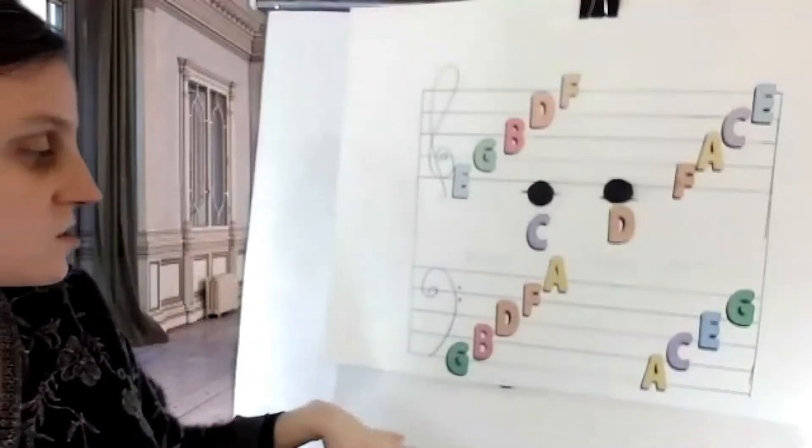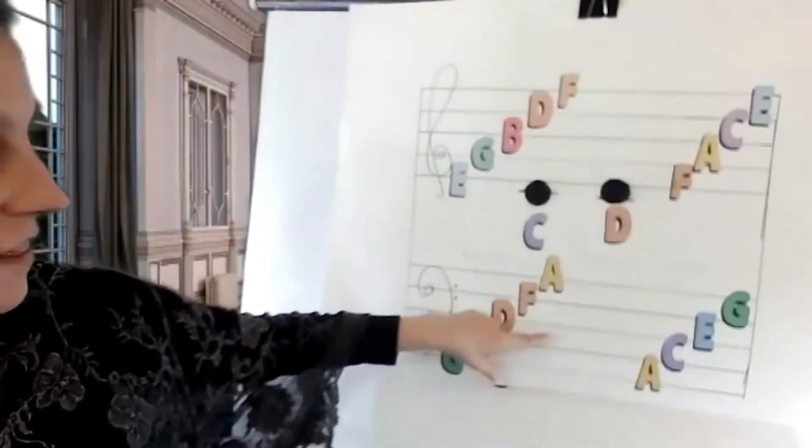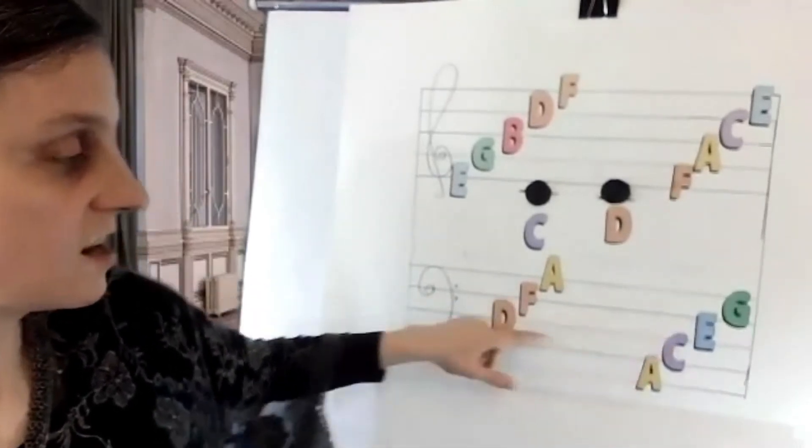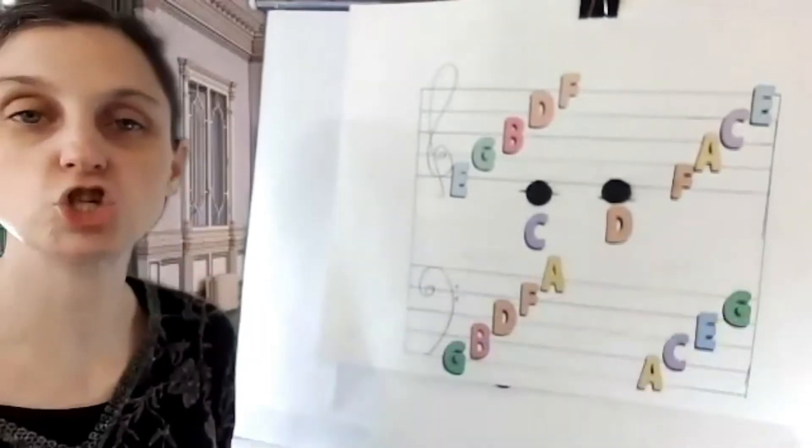And for the spaces, we've got this bottom space is A. The next space is C. This space right here is E, and the top space is G.